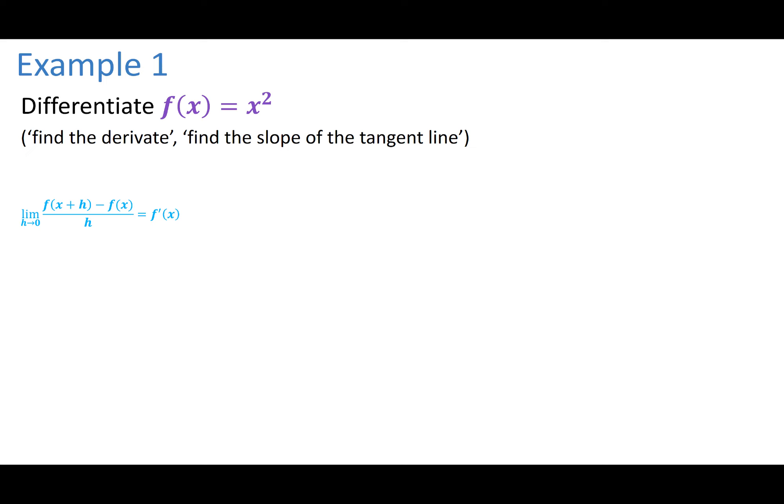Let's do a little more practice. If I wanted to differentiate the function F of X equals X squared — what this means is find the derivative, find the slope of the tangent line. That word differentiate — that's what it means; we're trying to find the derivative. And the derivative represents the slope of that tangent line. So let's use the form: the limit as H approaches zero of F of X plus H minus F of X, all over H, because that is the derivative.